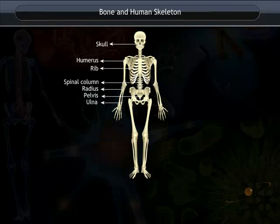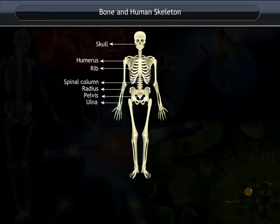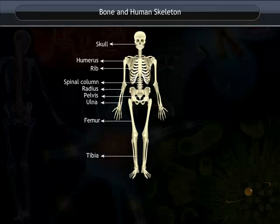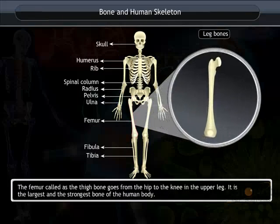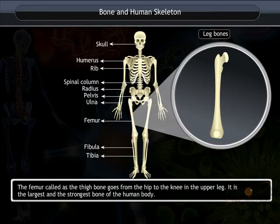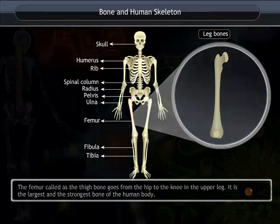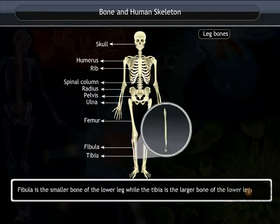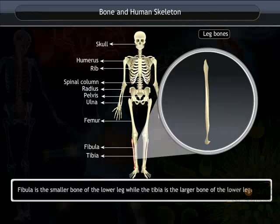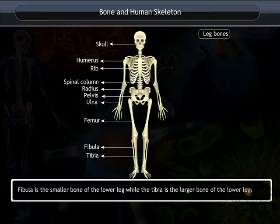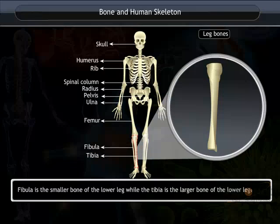Similarly, the leg bone also has three major bones: femur, tibia and fibula. The femur, called the thigh bone, goes from the hip to the knee in the upper leg. It is the largest and the strongest bone of the human body. The fibula is the smaller bone of the lower leg, while the tibia is the larger bone of the lower leg.